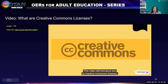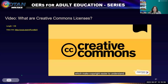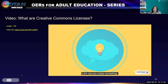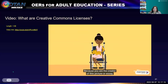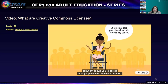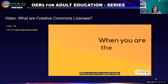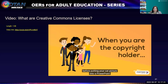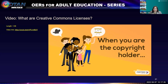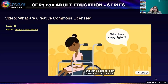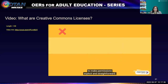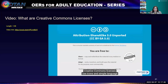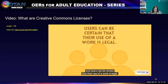Creative Commons licenses make copyright easier to understand. When you create something — a picture of your cat or an essay — copyright allows you to decide what people can do with your creation. Getting permission can be time-consuming and complicated for both the creator and the user. Creative Commons exists to make permissions explicit and straightforward, using icons and simple language so creators can make their intentions clear and users can be certain their use of a work is legal.